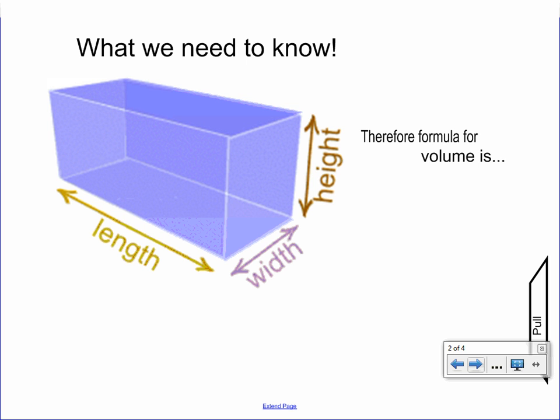So for every different kind of rectangular prism, we're going to have some kind of length, some kind of width, and some kind of height. We're going to use these for the formula for volume.